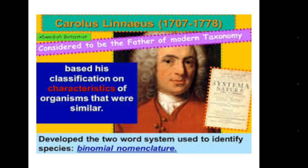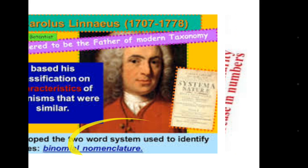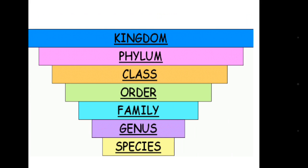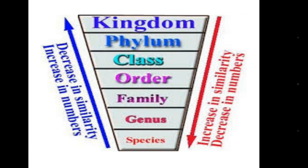Carolus Linnaeus also gave the system of binomial nomenclature. When we classify any organism into these seven steps, the organisms' similarity decreases and they increase in number as we go from Kingdom to Species.